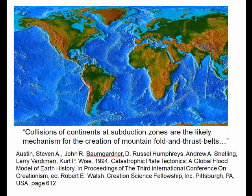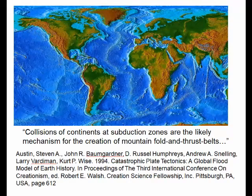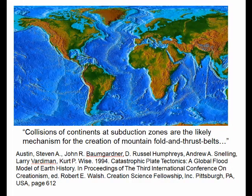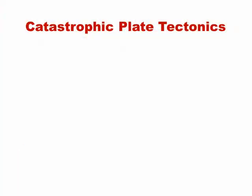Collisions of continents at subduction zones are the likely mechanism for the creation of mountain fold and thrust belts. That is true for the Himalayas, but not for the Andes and Rocky Mountains, which have no colliding continent opposing them. How are these mountain ranges built?